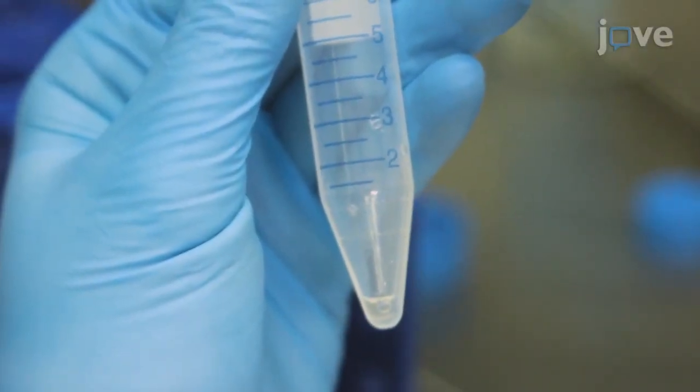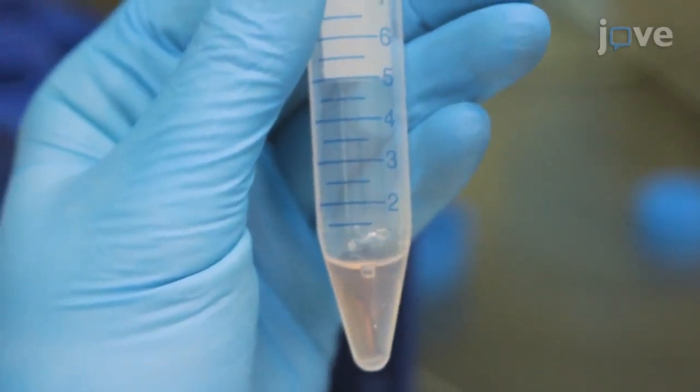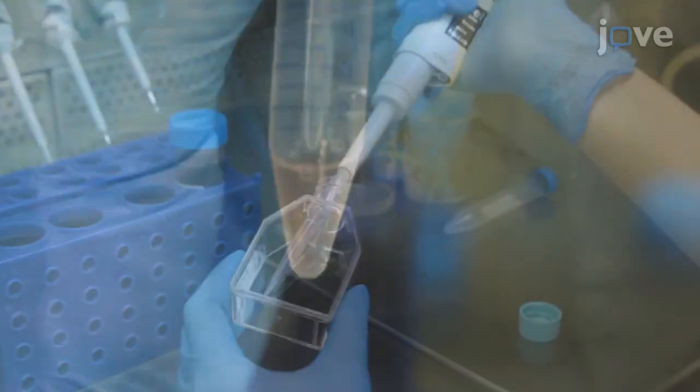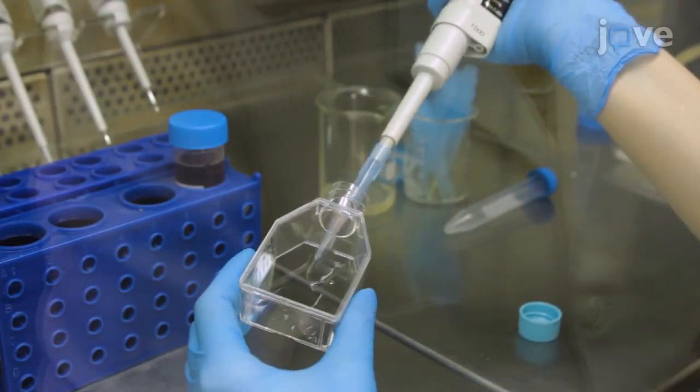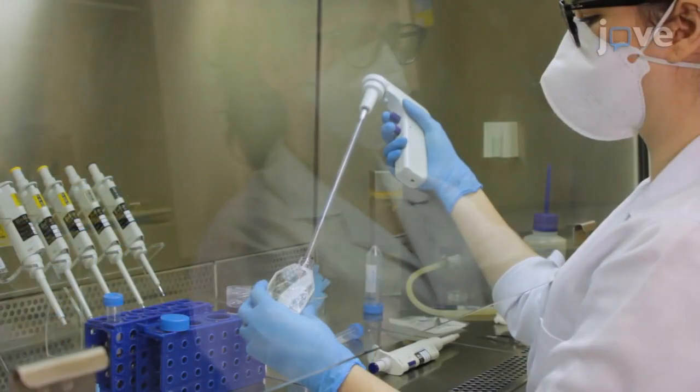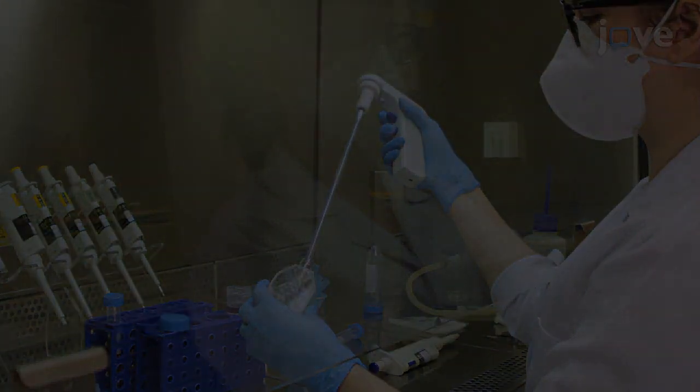After discarding the supernatant, suspend the cell pellet in 1 ml of astrocyte culture medium. Transfer the cell suspension to a T25 culture flask and make up total medium volume of 4.5 ml.